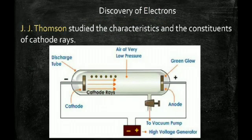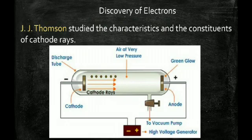The first subatomic particle was discovered by J.J. Thomson — that was the electron. It was discovered through the cathode ray discharge tube experiment. The experimental setup is a tube at near-vacuum, very low pressure. Two conditions are required: near-vacuum and very high voltage. Under these conditions, current starts passing through the gas from cathode to anode.